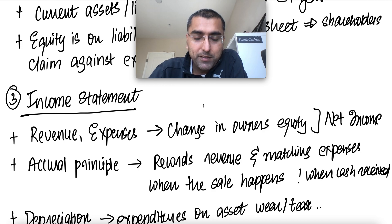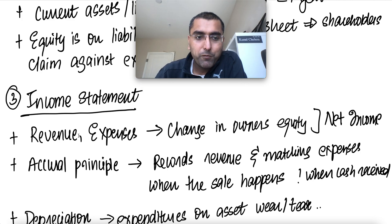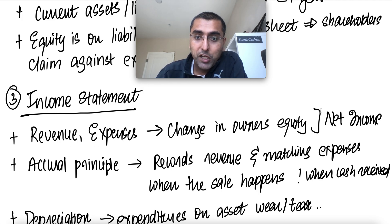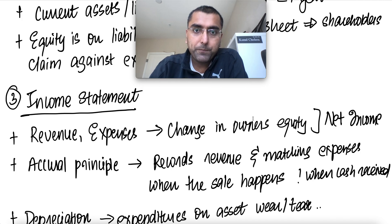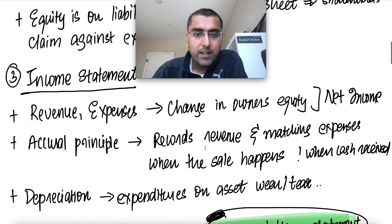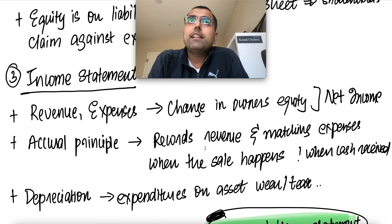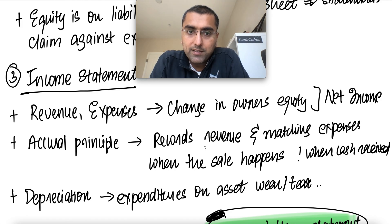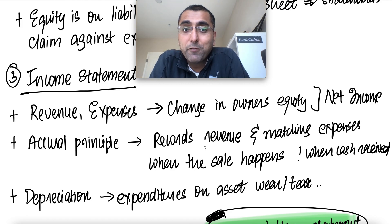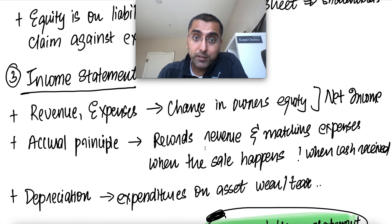The income statement has revenues or sales and expenses including cost of goods. Net income is basically revenue minus expenses, taxes, and everything else. Net income helps improve owner's equity — as the company does well, the owner's claim gets bigger. We know about the accrual accounting principle: when a company sells something, revenue is recognized when the sale is done, not when the cash is received. Same applies for expenses.